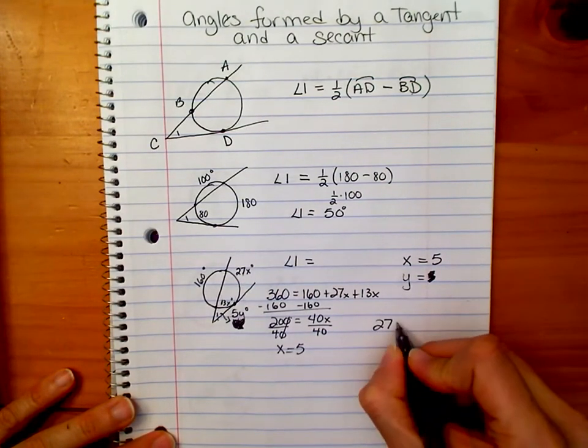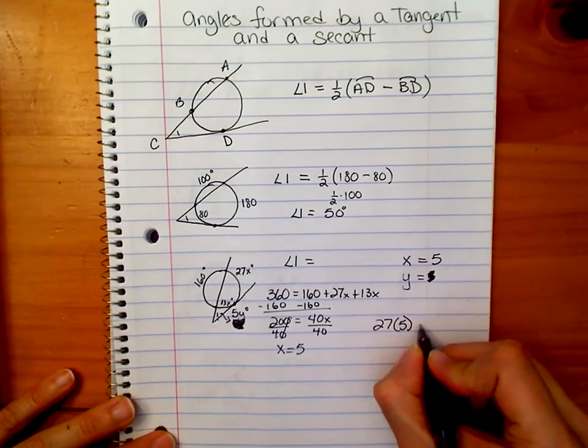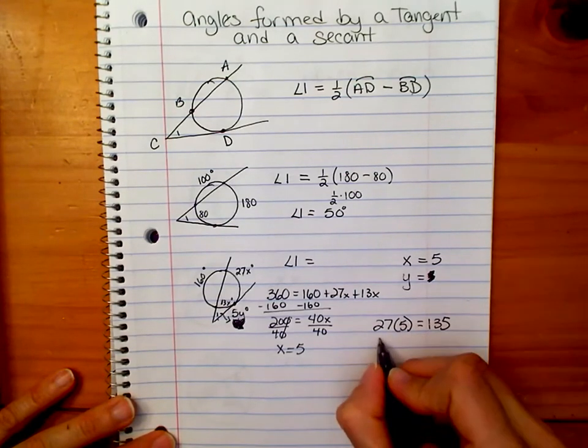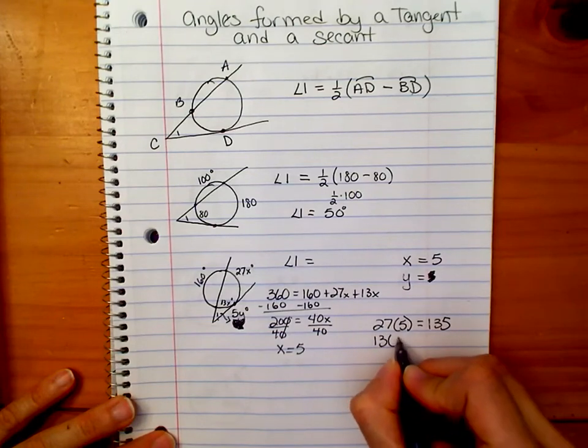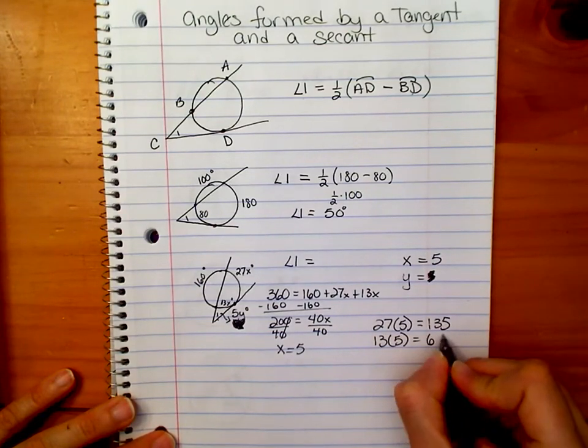So 27x, and x was 5, is equal to 135. And 13x, or 13 times 5, is equal to 65.